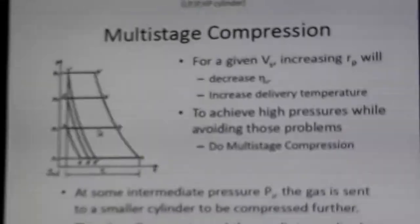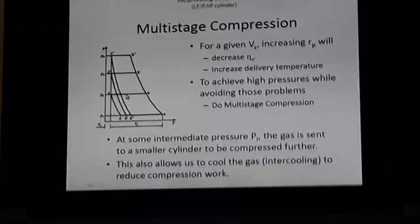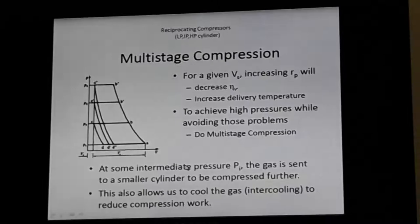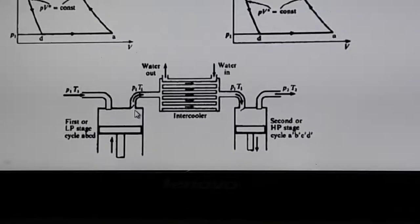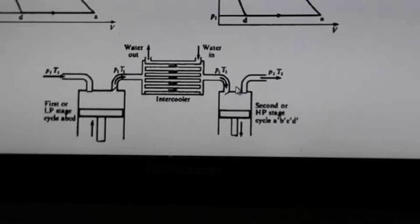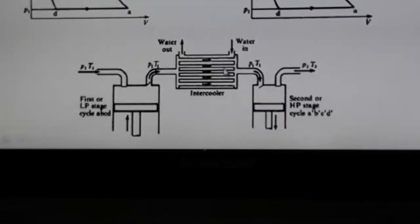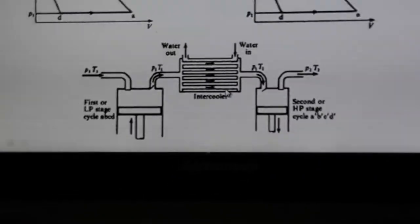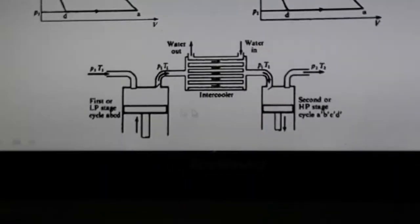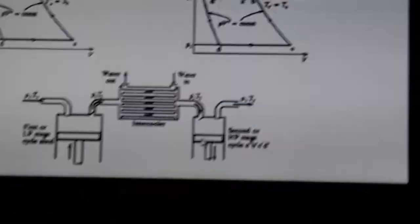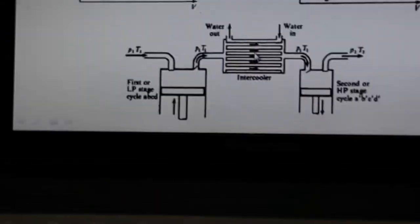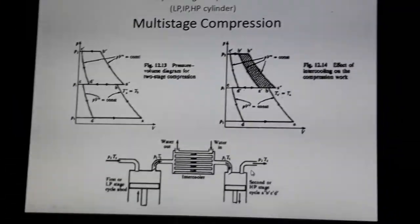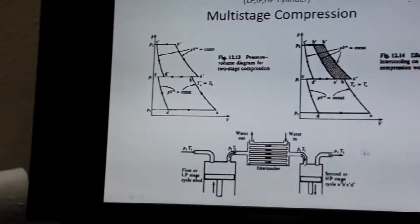The work required for each stage can be derived as before. In the arrangement, the low-pressure cylinder and high-pressure cylinder are connected with an intercooler between them. For a two-stage compressor there is one intercooler; for a three-stage compressor there are two intercoolers between the cylinders, with an intermediate pressure cylinder in between.